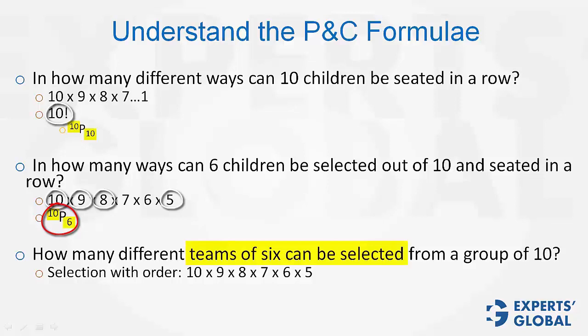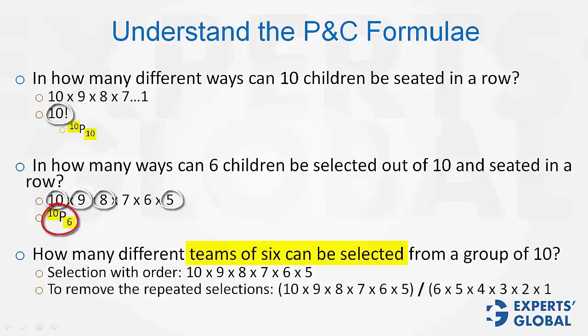We divide this entire thing by the number of ways in which 6 elements can be shuffled among themselves. In how many ways can 6 elements be shuffled? That would be 6 times 5 times 4 times 3 times 2 times 1. Basically, 6 factorial. So, to remove the repeated selections because of unnecessary counting of orders, we divide this value by 6 factorial.